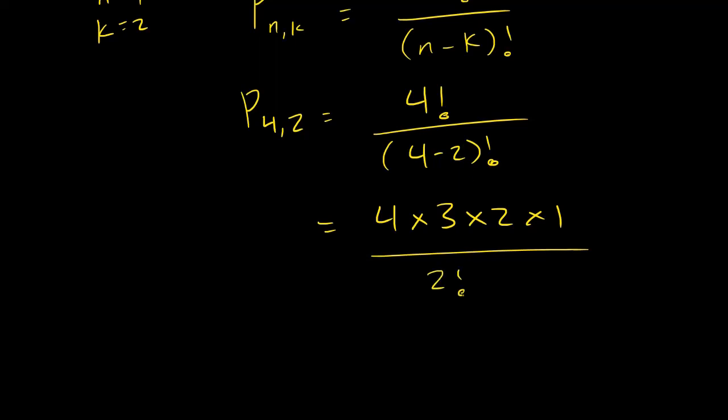Two factorial is the same thing as two times one. So you notice that this cancels with this, and you're left with four times three, which is 12.